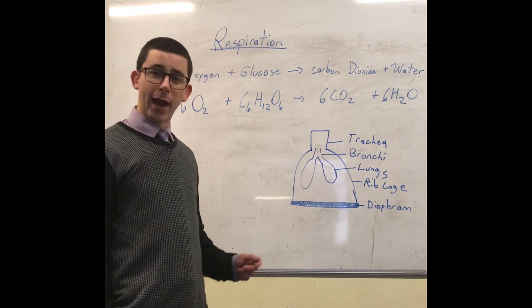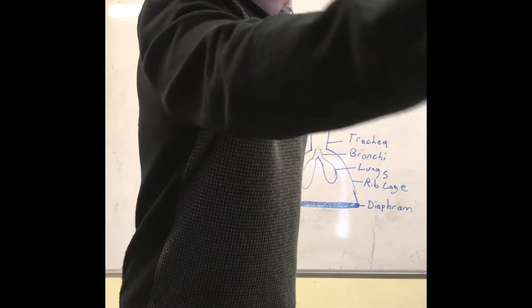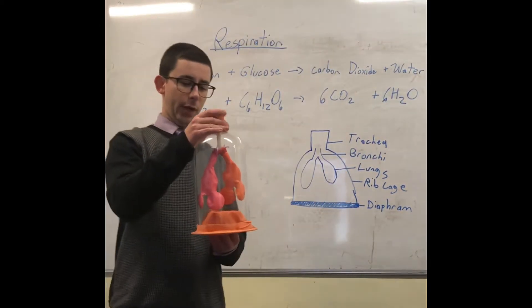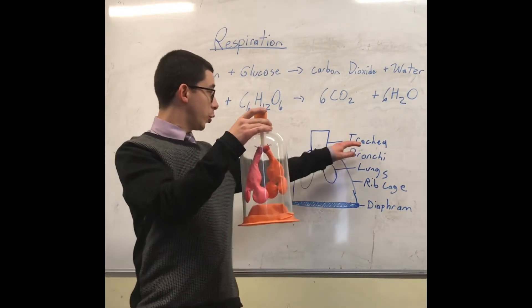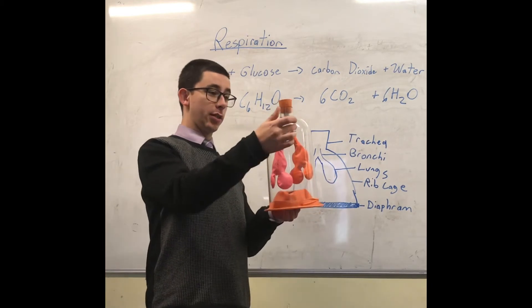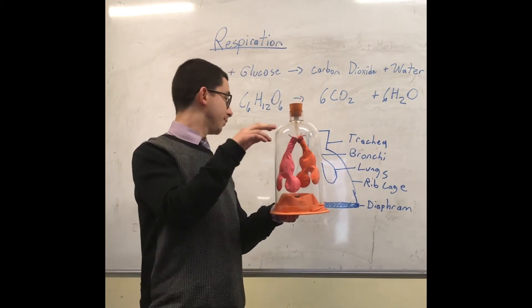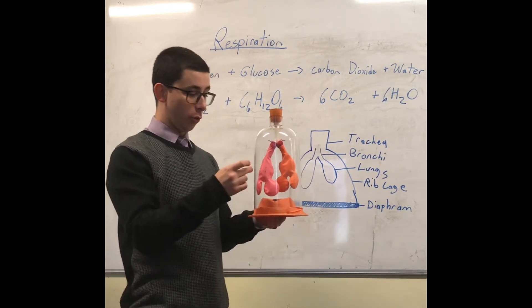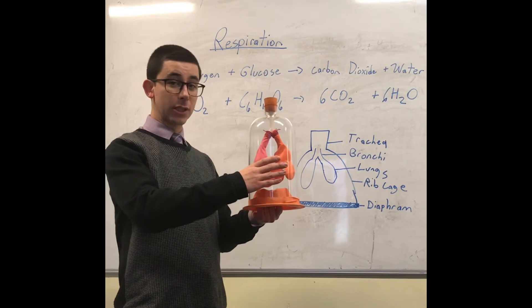Today we're going to be looking at the bell jar model of the lung. In this model, the top here represents the trachea. This separates into the bronchi, which is the white tube inside the jar. The lungs are represented by the balloons and our rib cage is represented by this glass jar.